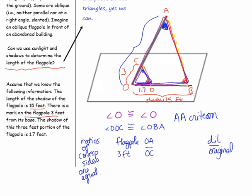We'll consider the larger triangle as the dilated and the smaller one as the original. That takes care of the lengths along the flagpole. Now let's consider the lengths along the shadow: the flagpole shadow is segment OB (the dilated), and the section shadow is 1.7 feet, segment OD (the original). That sets up our ratios of corresponding sides.